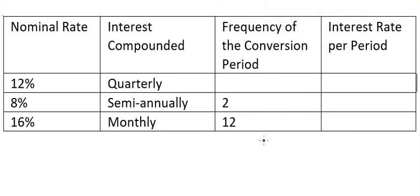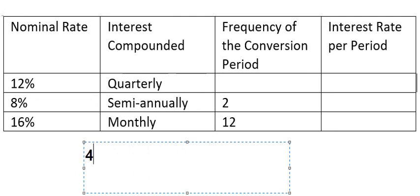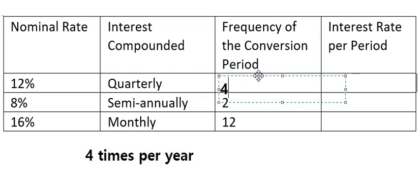Hello everybody. Today I want to talk about finance — the topic is about interest rates. The first thing we need to know is the frequency of the conversion period. For example, quarterly means it will appear four times per year, so we put the number four. Semi-annually means two times per year, and monthly means 12 times per year.